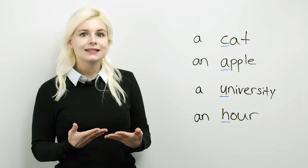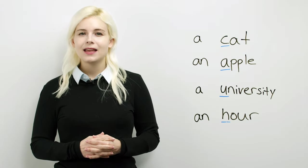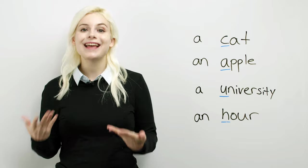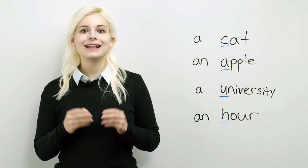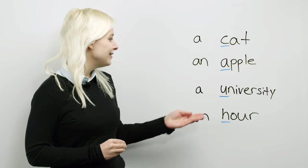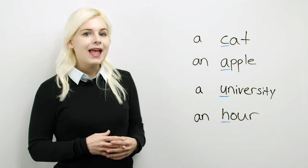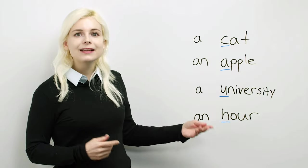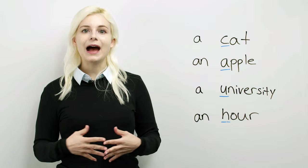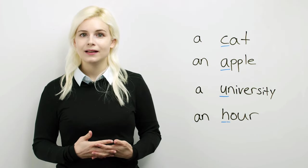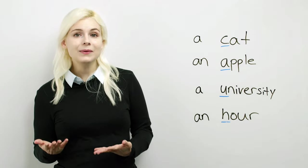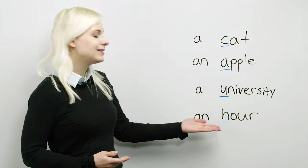Cat is a consonant sound, so we use a. Apple is a vowel sound, so we use an. University is the Y sound, and Y is a consonant. Because it has that Y consonant sound, we use a. Hour, the H is silent. Hour begins with a vowel sound. Because it has that vowel sound, we use an.